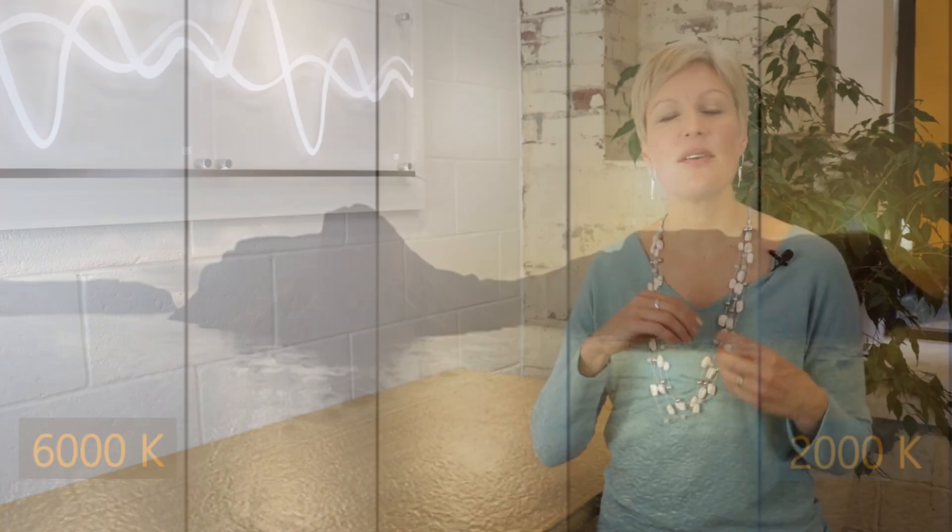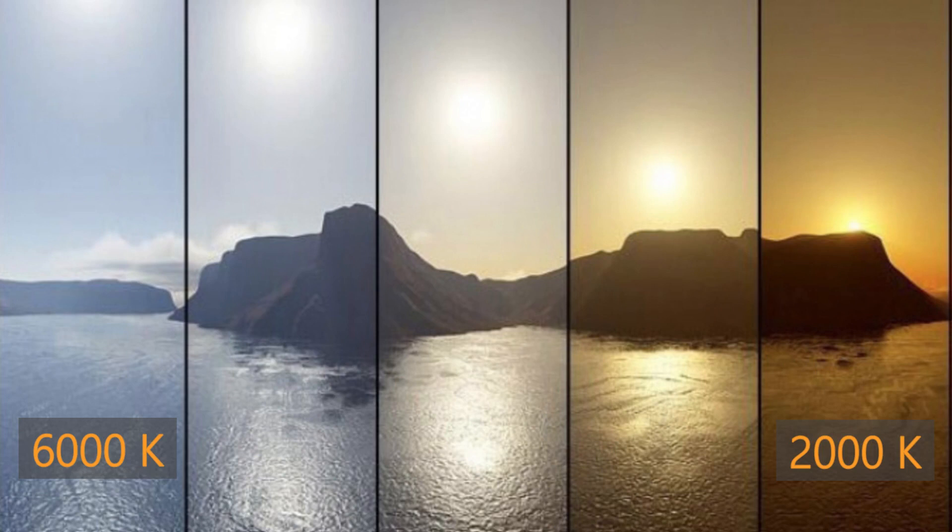These changes in temperature mimic the varying colors of daylight throughout the day. For example, 6,000 Kelvin is similar to daylight at midday — a cool blue-white — and this goes right down to 2,000 Kelvin, which is a warm yellow-orange light, similar to sunset, candlelight, or firelight.